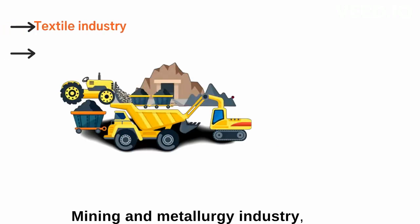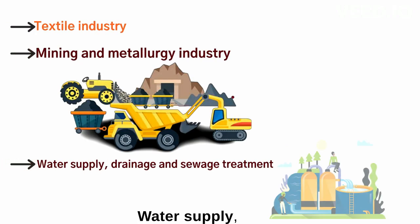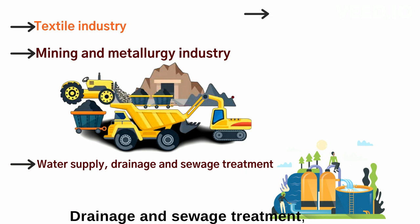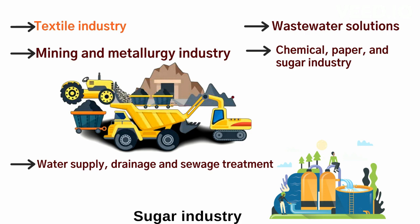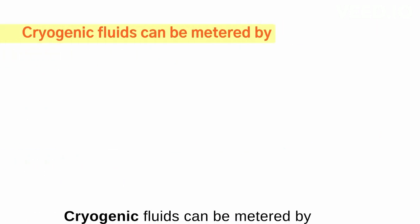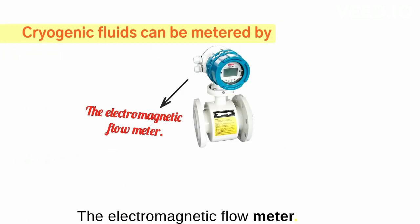Industries include textile, mining and metallurgy, water supply, drainage and sewage treatment, wastewater solutions, chemical, paper, and sugar. Cryogenic fluids can also be metered by electromagnetic flow meters.